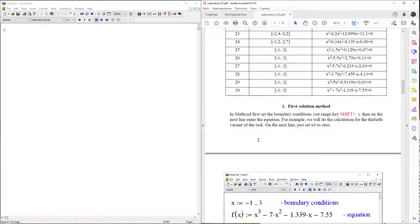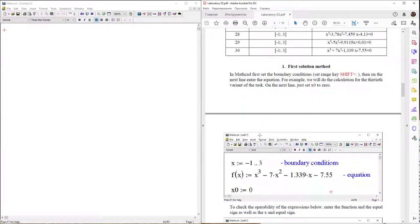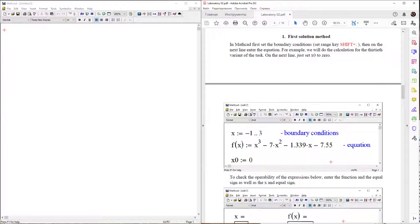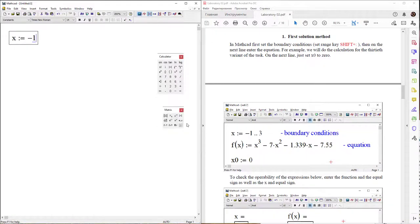This work by four different methods finds solution to the same equation. First of all, find boundaries at minus one, then open calculate, open matrix palette, and use range of variable sign.